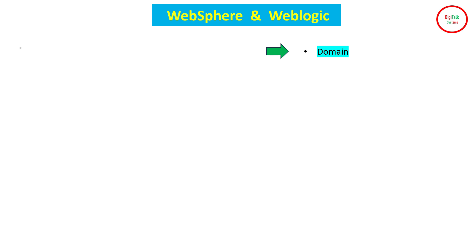Similarly, in WebSphere the corresponding term is called a cell. A cell is similar to the domain in WebLogic — it contains all the resources of WebSphere. Just like a domain, the first thing we create after installing WebSphere is a cell. Some terminologies are different, which we will cover in future sessions in detail. But for now, if someone refers to a cell and you have knowledge of WebLogic, you can consider the cell as equivalent to a domain in WebLogic, containing all resources of WebSphere.